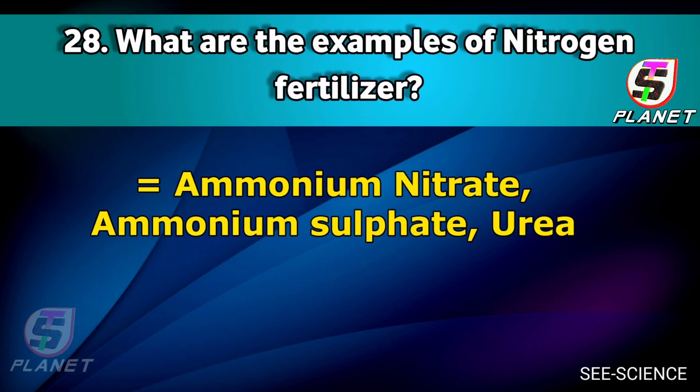Question number 28: What are the examples of nitrogen fertilizers? Answer: Ammonium nitrate, ammonium sulfate, and urea.